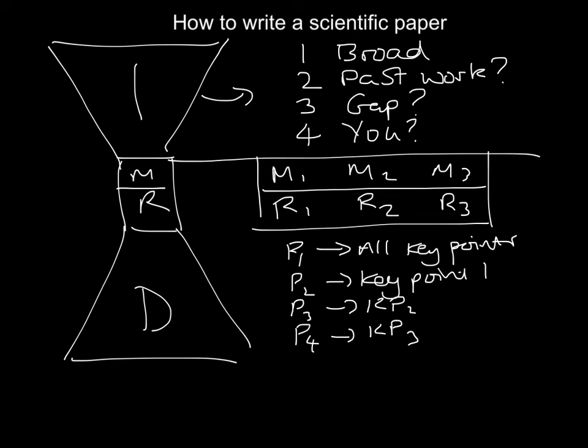And then the subsequent paragraphs take each of those key points in turn and consider them in the context of the broader literature. Once you're out of your key points, then you can start to think about broader topics. P5 onwards is the broader literature again.